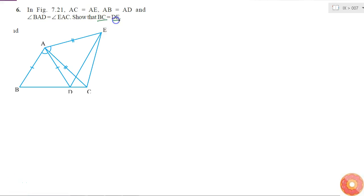In this question, I have to show that BC is equal to DE. That means this side is equal to this side. How can I prove that?